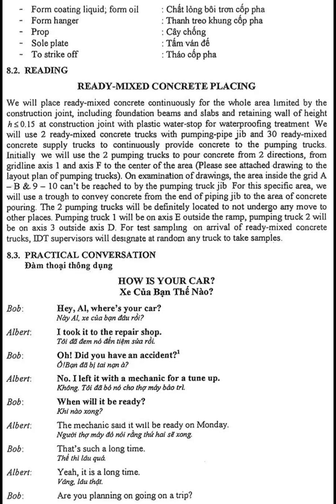We will use two ready mixed concrete trucks with pumping pipe jib and 30 ready mixed concrete supply trucks to continuously provide concrete to the pumping trucks. Initially, we will use the two pumping trucks to pour concrete from two directions, from grid line axis 1 and axis F to the center of the area. Please see the attached drawing for the layout plan of pumping trucks.